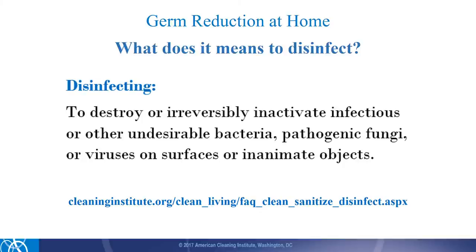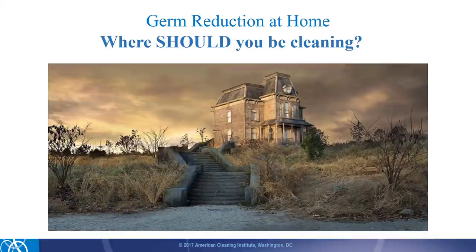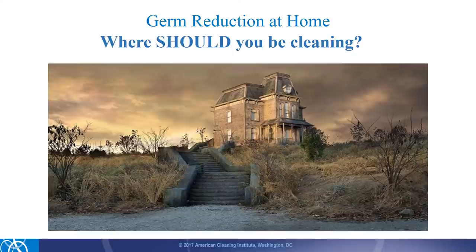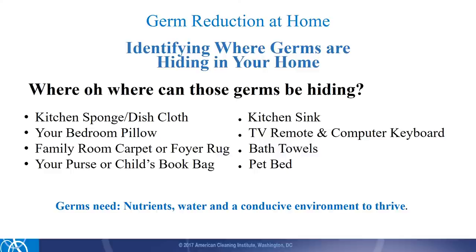One way to ensure that these steps are identified is to make sure you are using the cleaning products correctly and by reading the cleaning product label and following the manufacturer's recommendations. Now that we've identified the differences between cleaning, sanitizing, and disinfecting, we need to identify areas in your home where germs are and the level of clean needed to remove them. I want you to take a step back and look at your home through the lens of what areas could be a haven for germs.